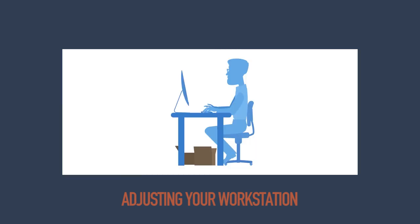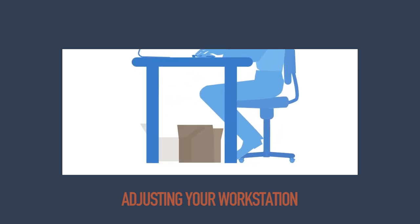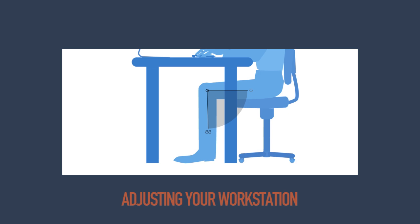Make sure there is space under your desk to move your legs freely, and make sure there aren't any obstacles such as boxes or equipment in your way. Avoid excess pressure from the edge of your seat on the backs of your legs and knees. A footrest may be helpful, particularly for smaller users, and your legs should normally be at 90 degree angles. Sam is showing you the recommended way to sit.